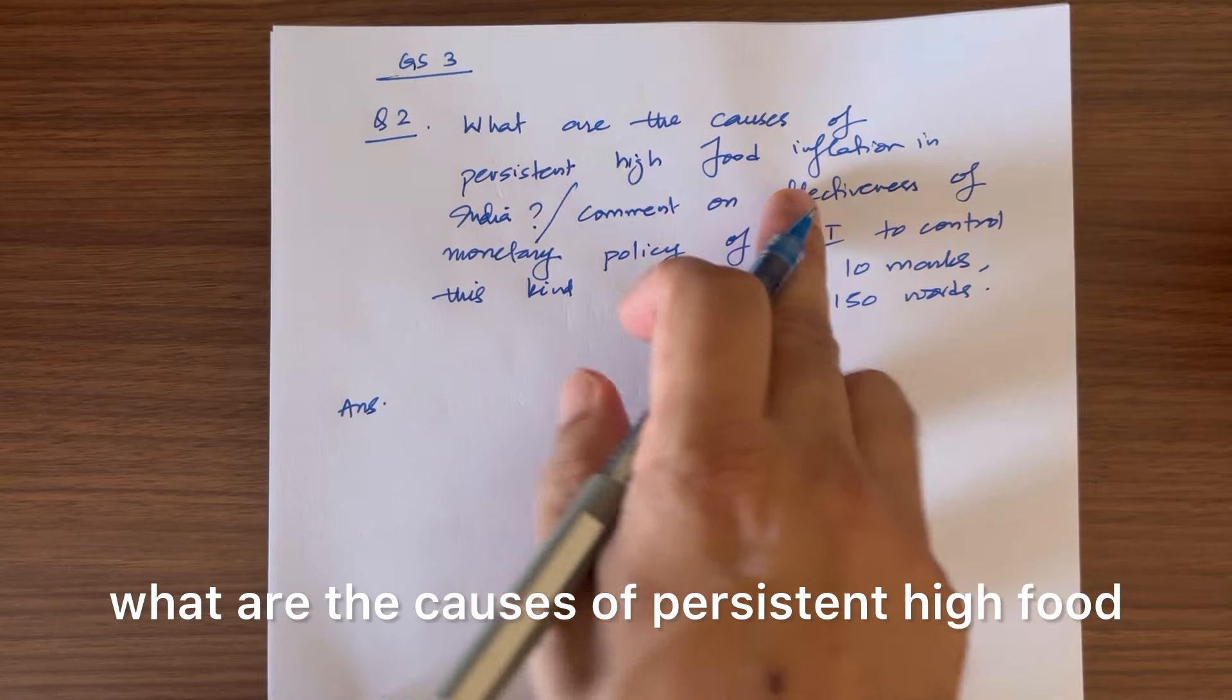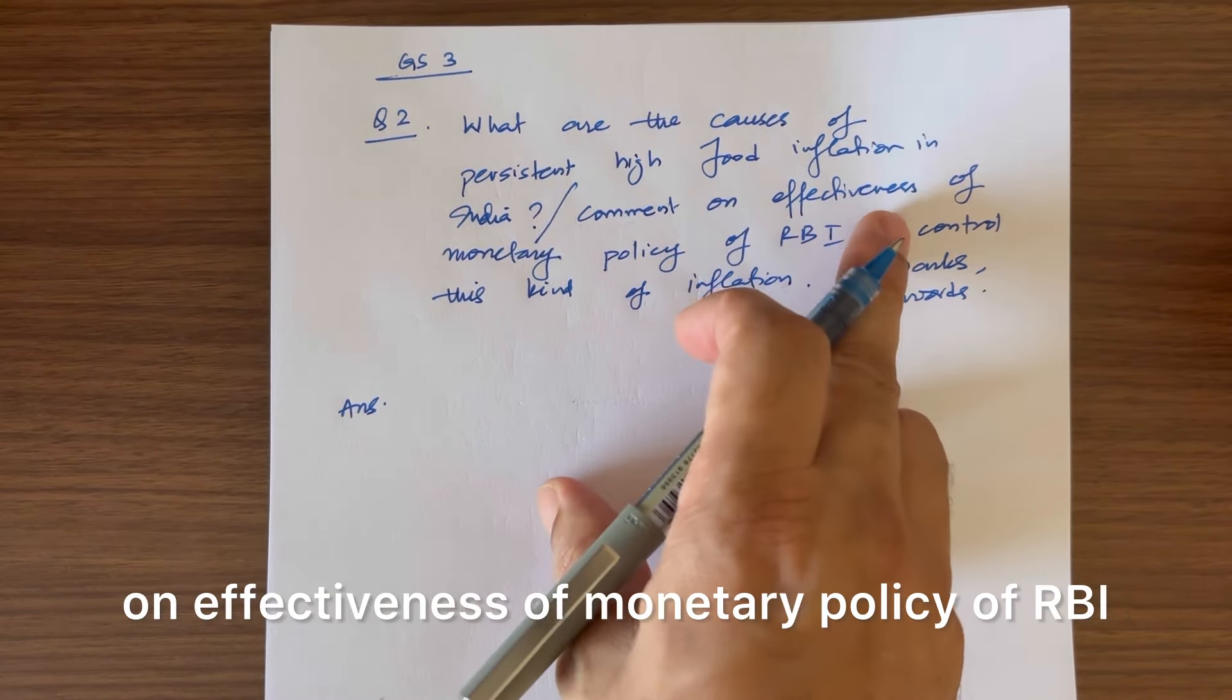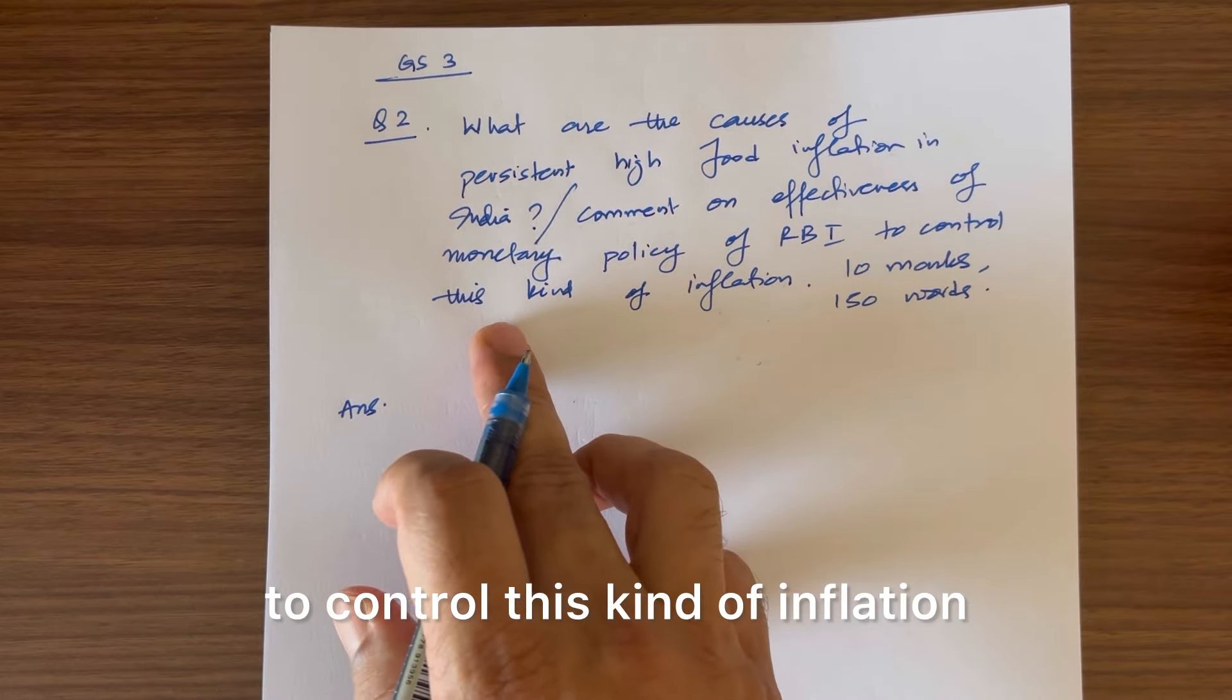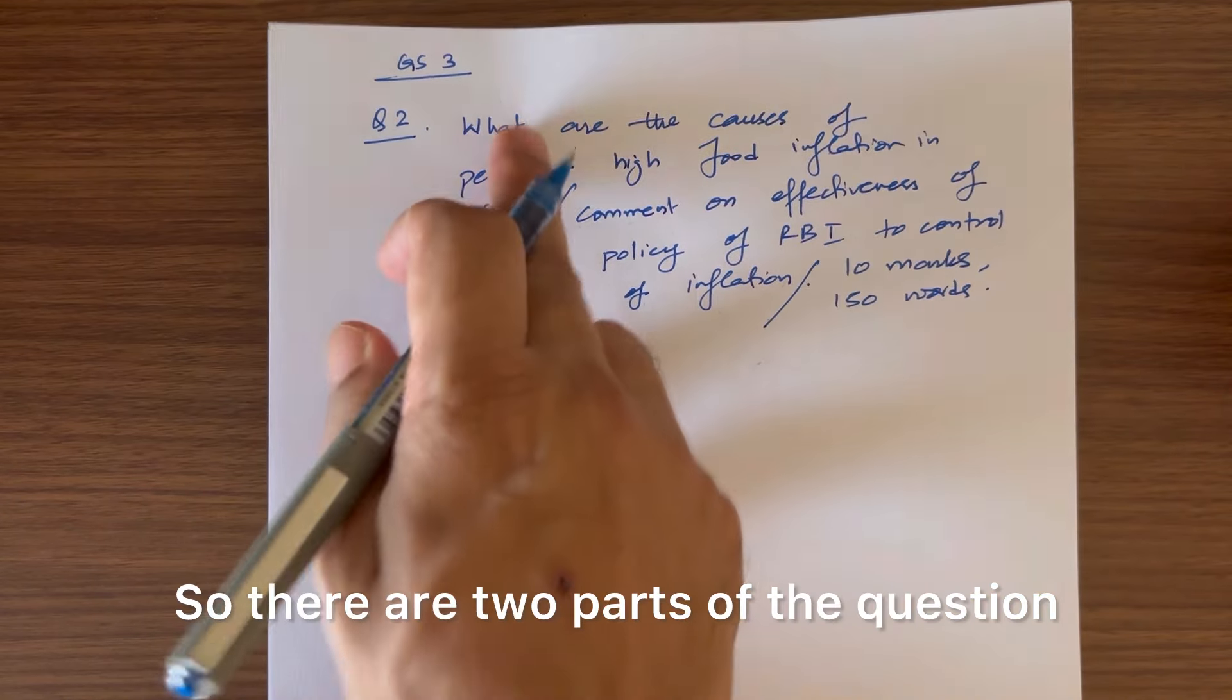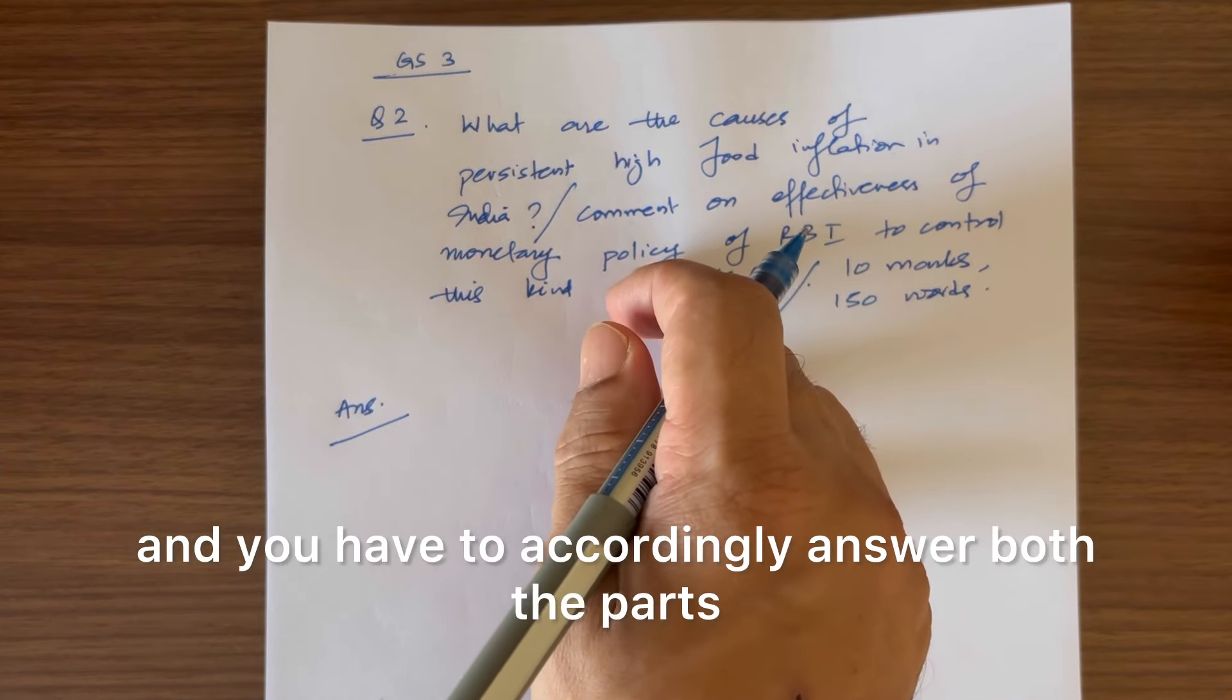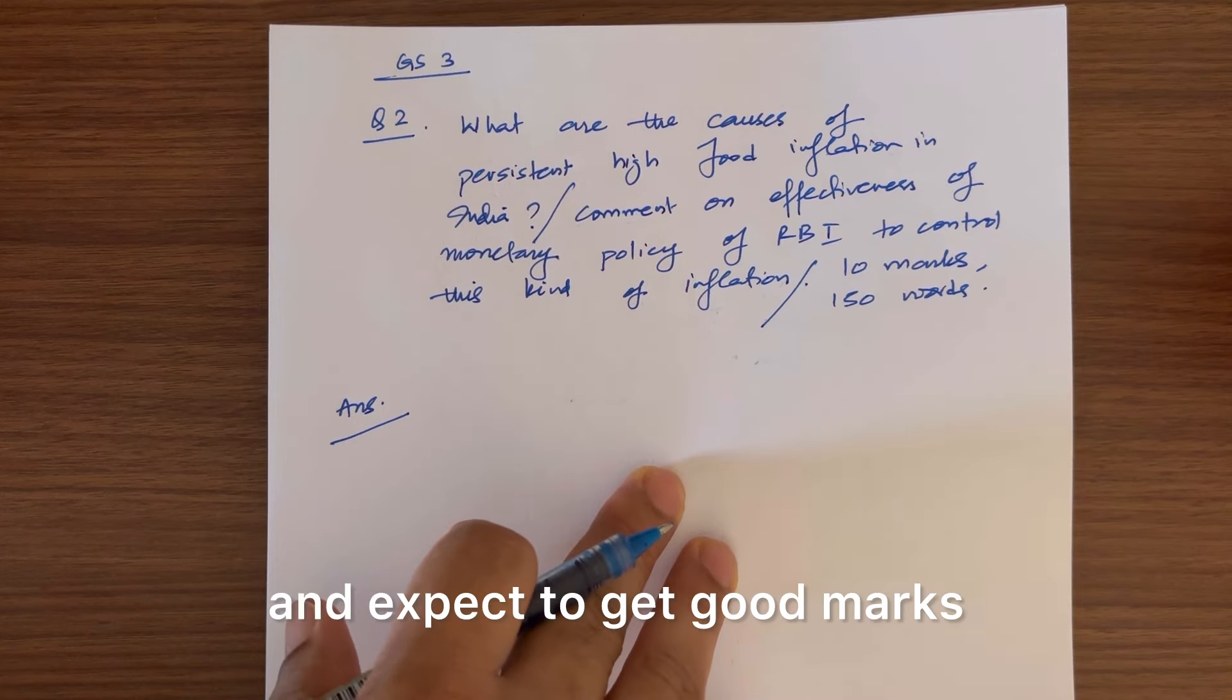The second part of the question is comment on effectiveness of monetary policy of RBI to control this kind of inflation. So there are two parts of the question. Number one, you have to identify the two parts of the question and accordingly answer both the parts. You can't leave out one part and expect to get good marks.